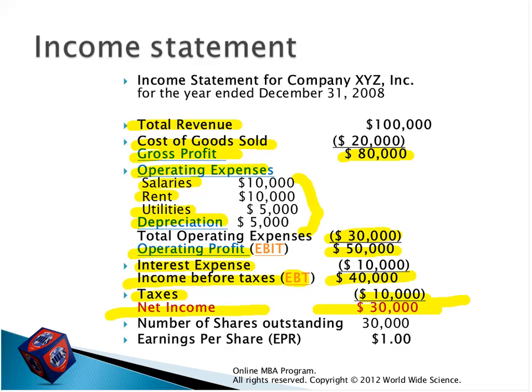Now we have the net income. We can see how much the company would be valued in the market. We calculate the number of shares — here given as 30,000. We divide net income by the number of shares the company has to get earnings per share — the value per share of the company — which is one US dollar. So for this company, one share in the market is valued at one US dollar. This is how we do income statement preparation based on the example — for a simple trading company that produces goods.